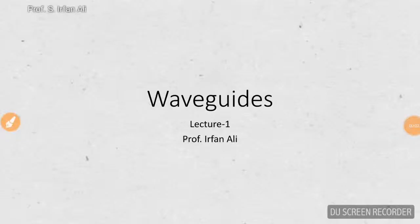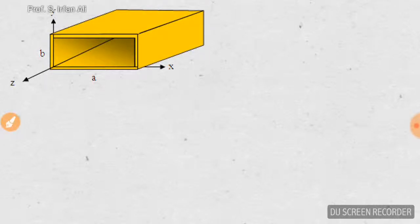Hello students. In this video I will be explaining about waveguides. The figure shows the basic structure of a waveguide, where the x-axis shows its width and the y-axis shows its height. In this figure, the width in the x direction is 'a' and the height in the y direction is 'b', so 'a' indicates its width and 'b' indicates its height.